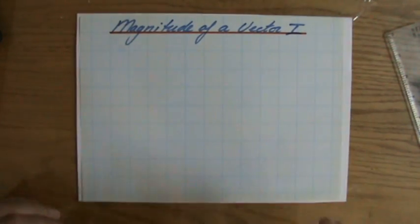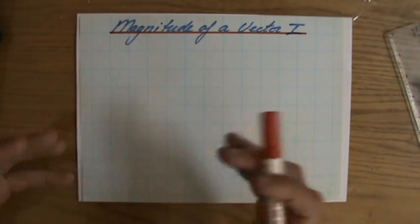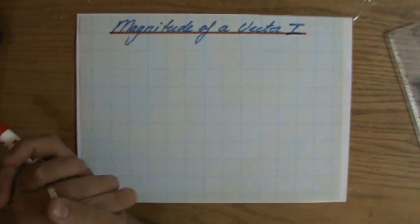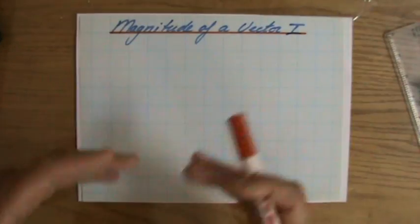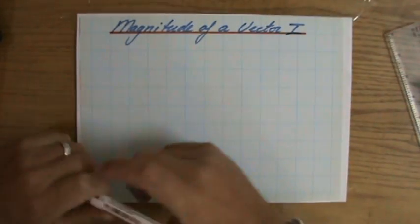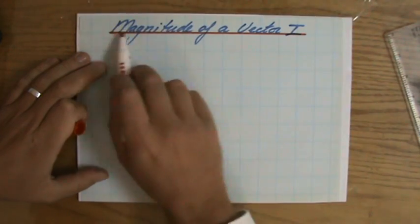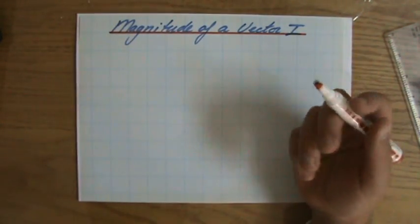Good to see you. Now that you are here, we are going to start to calculate the magnitude of a vector. As you know by now, hopefully, vectors have a magnitude, a size, and a direction. But now we are really going to be concerned about the size, the magnitude of a vector.